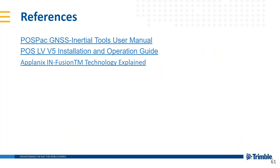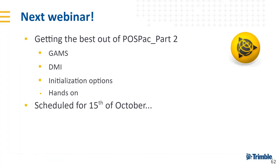Here are some resources you can use: the POSPEC GNS Inertia Tools User Manual — you can find everything for POSPEC post-processing in this manual; the POSLV installation and operation guides; and an article about Infusion technology. Next time we will introduce the second part of getting the best out of POSPEC, involving GAMS, DMI, initialization options, and hands-on software work. This is scheduled for October 15th.